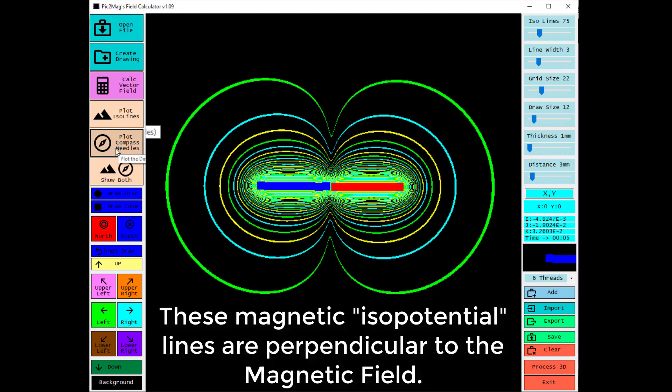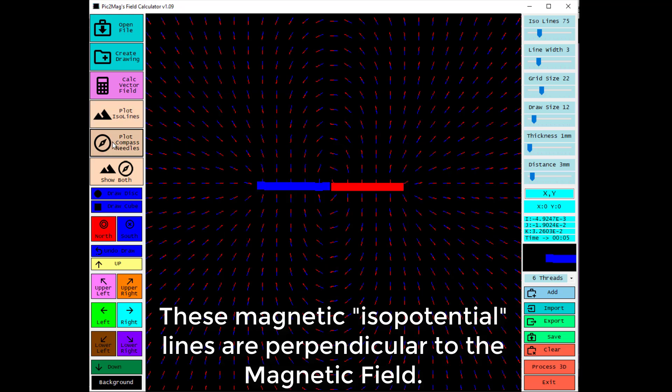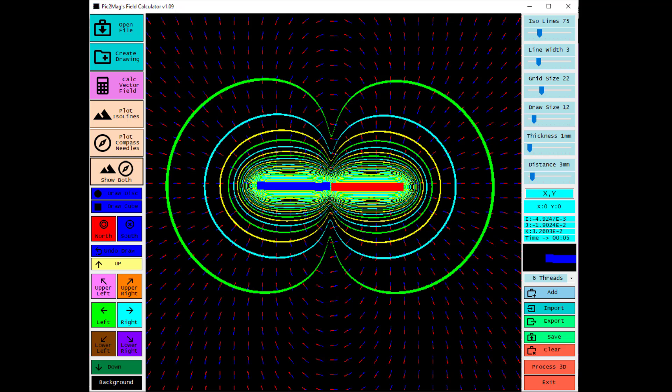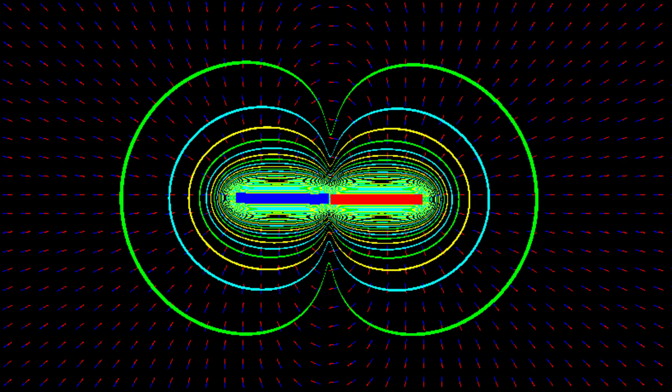These magnetic, quote, isopotential lines are perpendicular to the magnetic field. A close-up of the magnetic field and isopotential lines.